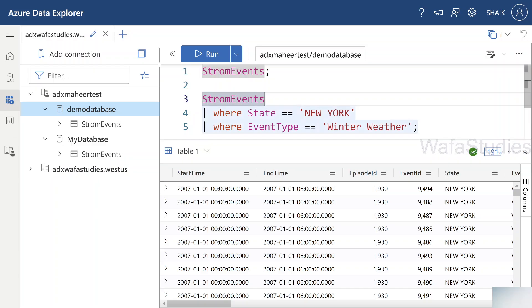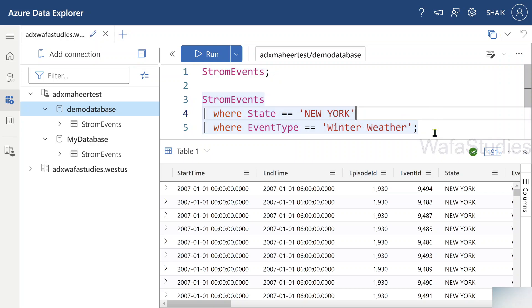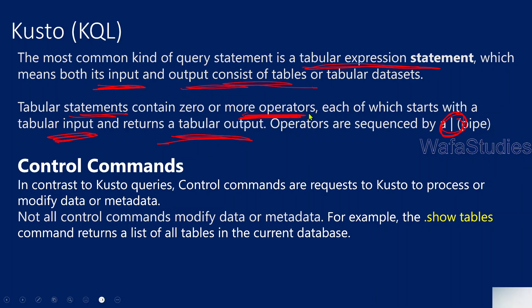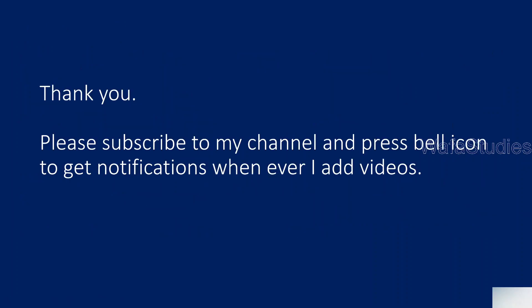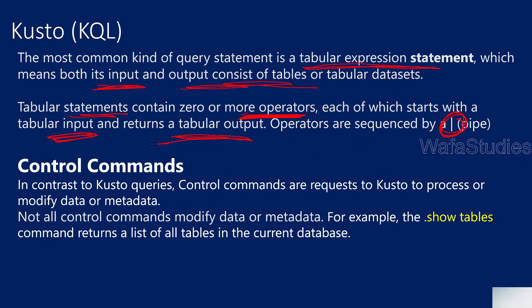So far we understand what a Kusto Query is — it can contain one or multiple statements separated by semicolons, and we understand tabular expression statements. Let statement and set statement we will see in the next videos. Now let's understand control commands. Control commands are also Kusto requests, but they try to modify the data or metadata. Whenever you are creating tables or inserting records, you use control commands. All control commands start with a dot.